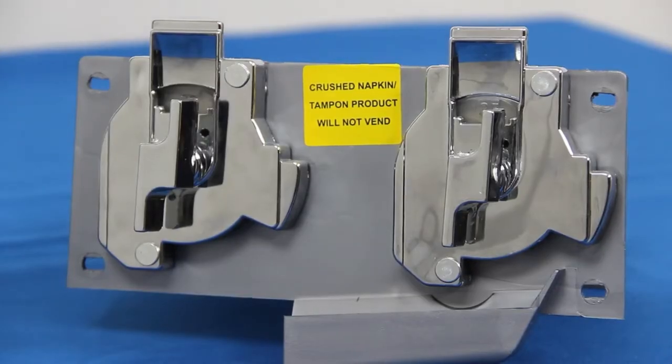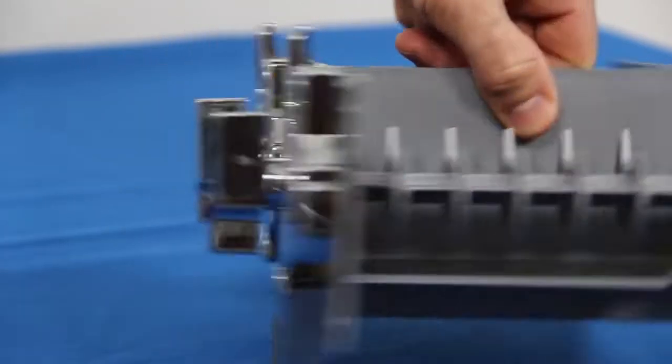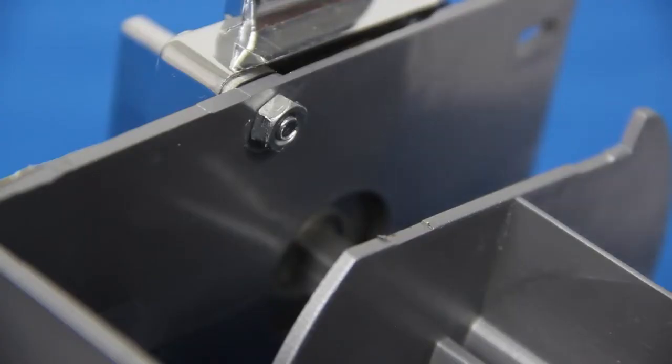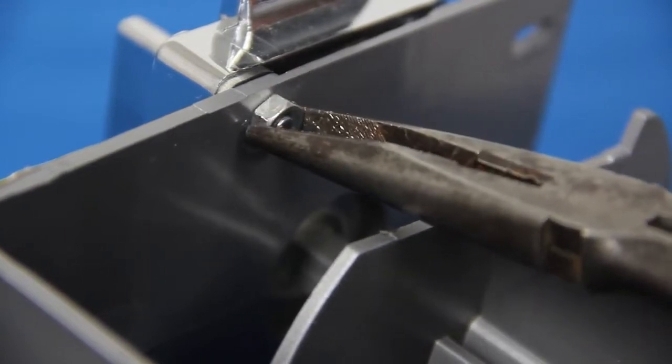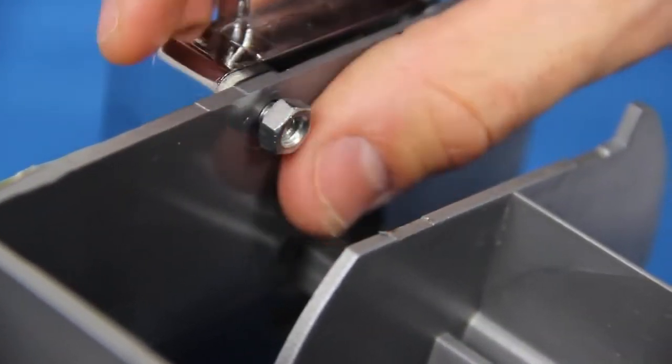The vending mechanisms are held in place by four carriage bolts, each secured by a nut. Remove the four nuts by loosening them with needle nose pliers. Once they are loose, you can unscrew them the rest of the way by hand.